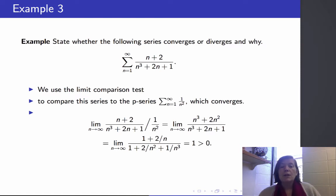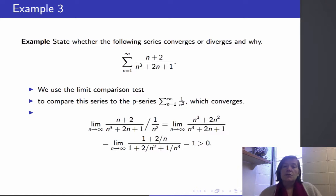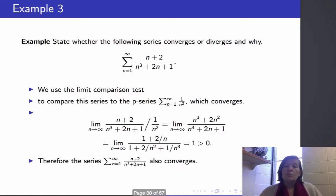Taking the limit as n goes to infinity of (n³ plus smaller terms) over (n³ plus smaller terms), that equals 1, which is greater than 0. So this series converges by the limit comparison test.